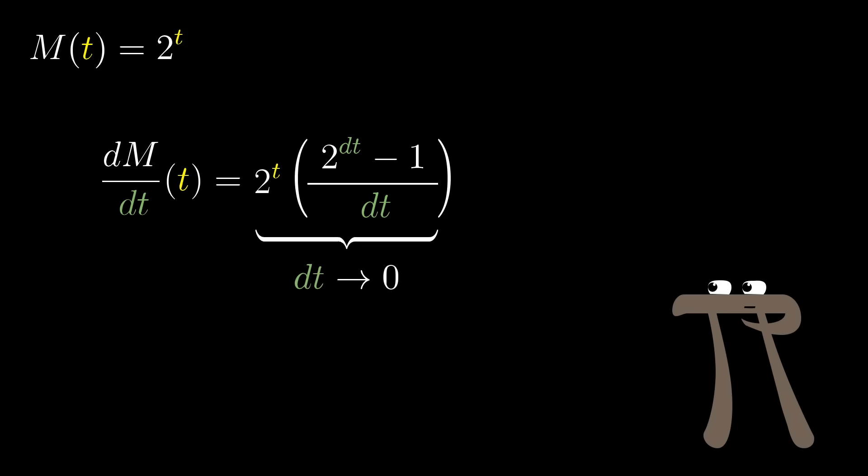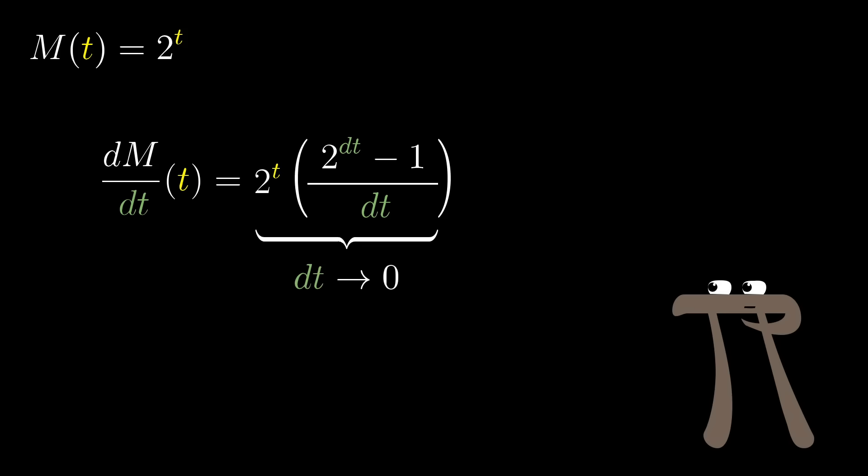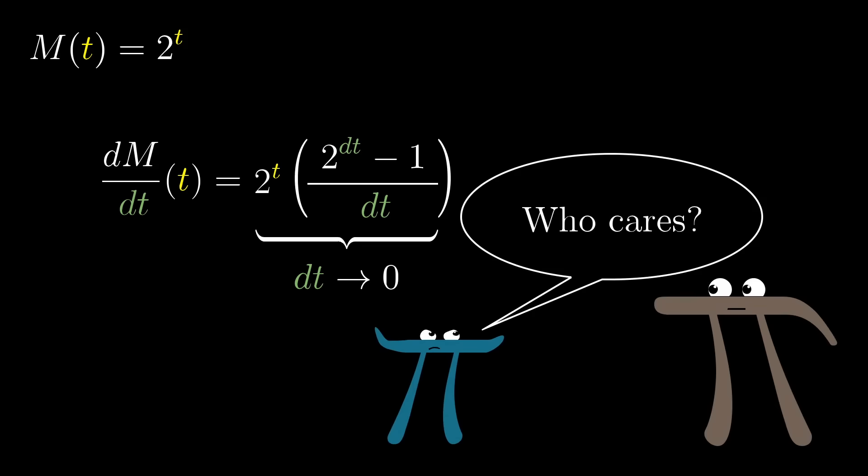And remember, the derivative of 2 to the t is whatever this whole expression approaches as dt approaches 0. And at first glance, that might seem like an unimportant manipulation. But a tremendously important fact is that this term on the right, where all of the dt stuff lives, is completely separate from the t term itself. It doesn't depend on the actual time where we started.